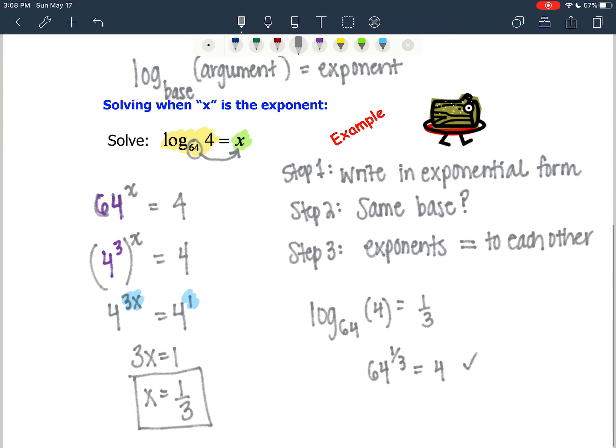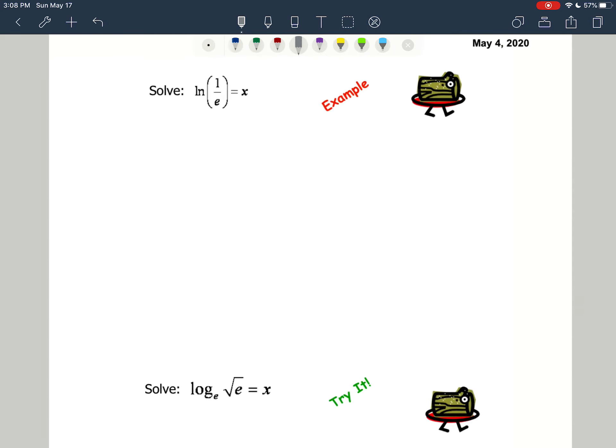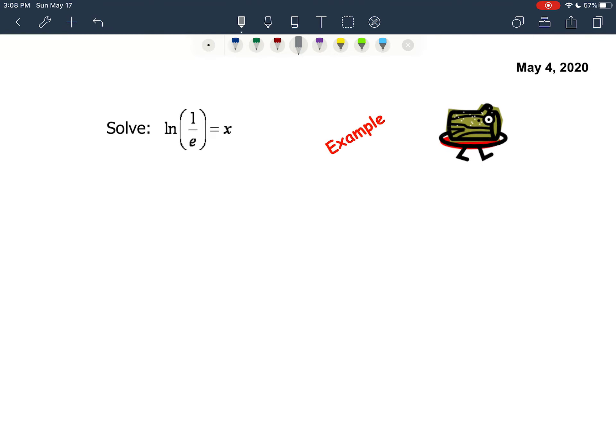Let's try another one of those. Here we have the natural log of 1 over e. The natural log of 1 over e is equal to x. Our first step is to write an exponential form. So we know that the natural log is a base e. We have e raised to the exponent of x is equal to 1 over e.